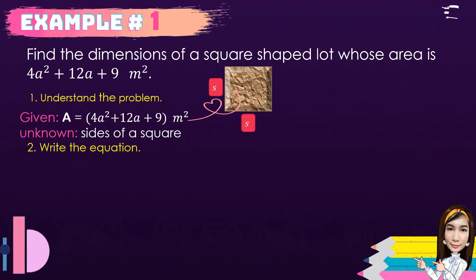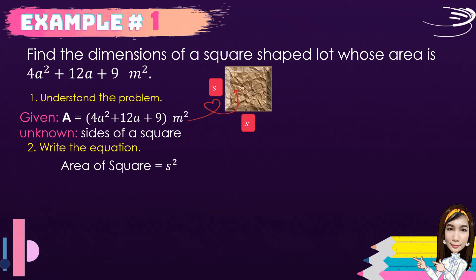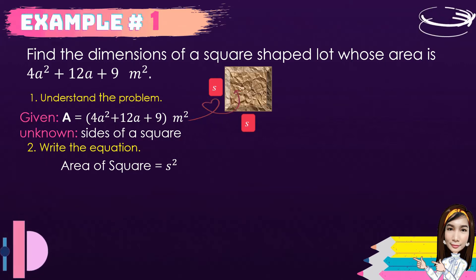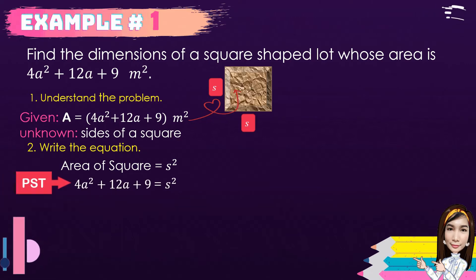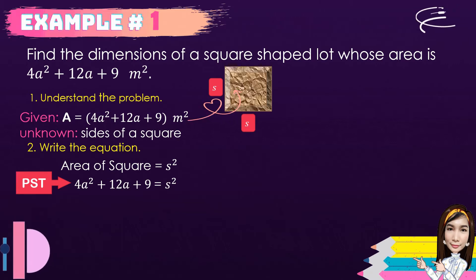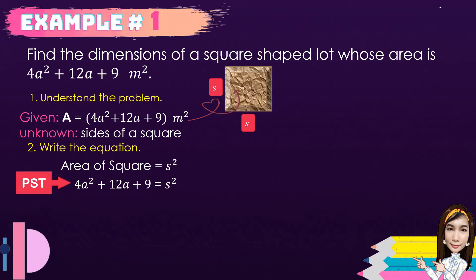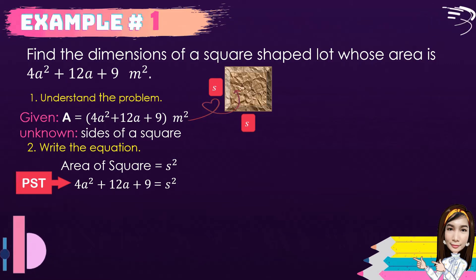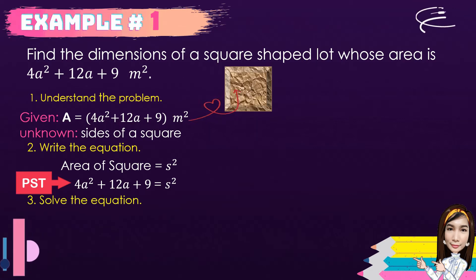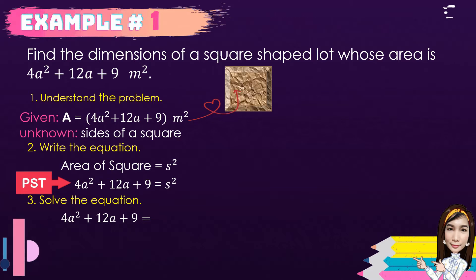For the second step, we're going to write the equation. The formula for the area of a square is side squared. Then we substitute 4a² + 12a + 9 as the area of the square. This is considered a perfect square trinomial — the first term is a perfect square, the last term is a perfect square, and the given is a trinomial.